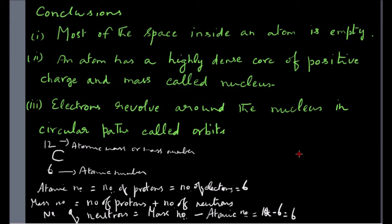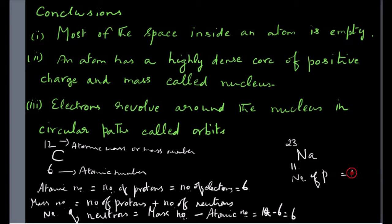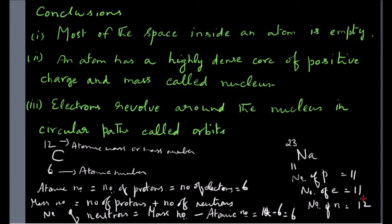Let me give you one more example. Sodium atom is represented as Na-11-23. The atomic number 11 gives you the number of protons and also the number of electrons. So the number of protons = 11, number of electrons = 11, and number of neutrons = 23 minus 11 = 12.